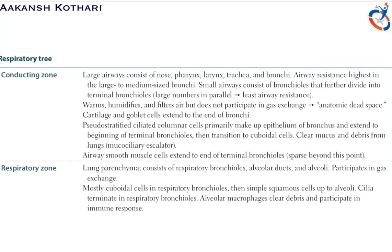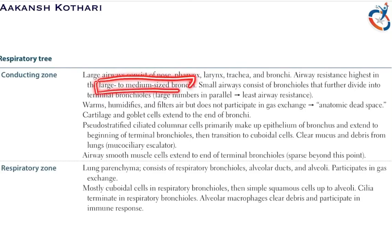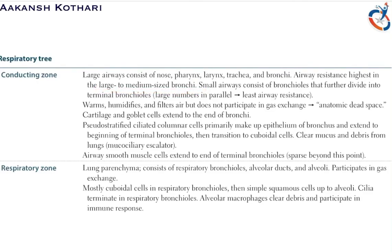The conducting zone consists of large airways — nose, pharynx, larynx, trachea, and the bronchi. The airway resistance is highest in the large to medium-sized bronchi. There are also small airways like bronchioles, which further divide into terminal bronchioles, and these are also part of the conducting system. The small airways have decreased resistance.